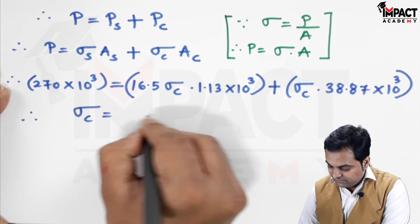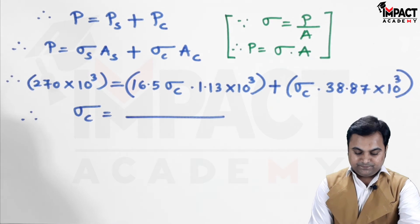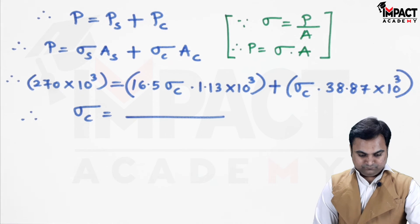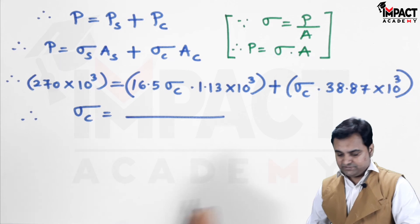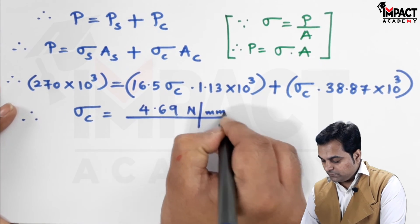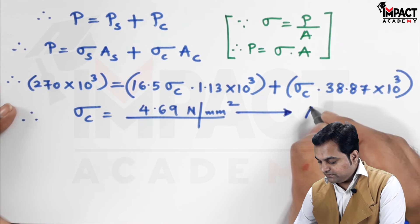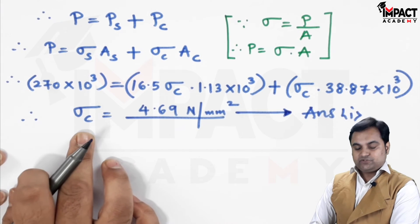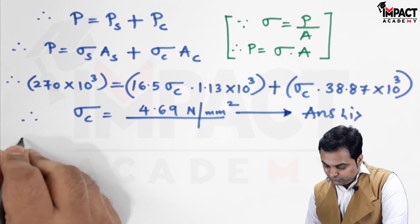So, on simplifying this, I am going to get the answer of sigma C. And, the value is 4.69 Newton per mm square. Keeping it as the first answer. That is the stress in concrete.